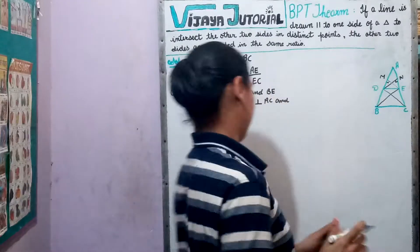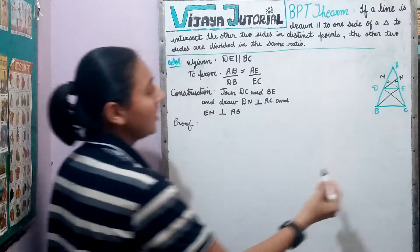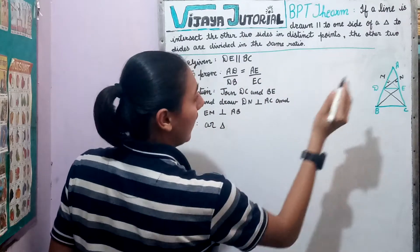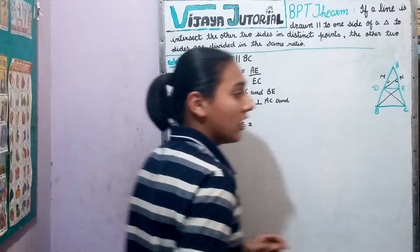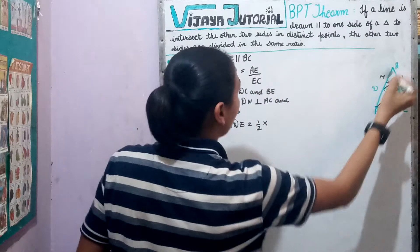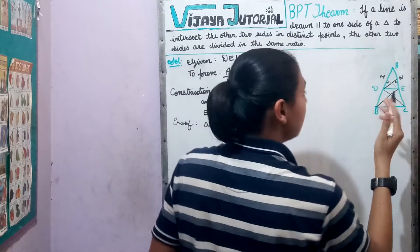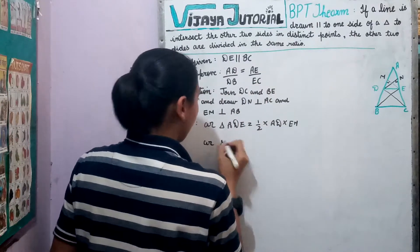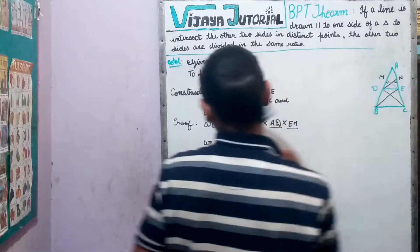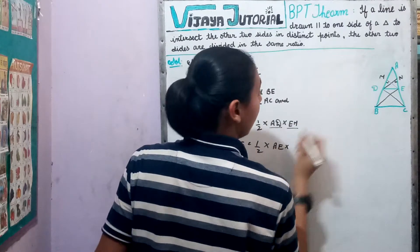Now let us move to the proof. To prove AD upon DB is equal to AE upon EC, we will take the area of triangle ADE, triangle DBE, and DEC. Area of triangle ADE equals half into AD into EM, where AD is the base and EM is the height. We also express the same triangle ADE as half into AE into DN, where AE is the base and DN is the altitude. So these are two area expressions for triangle ADE.